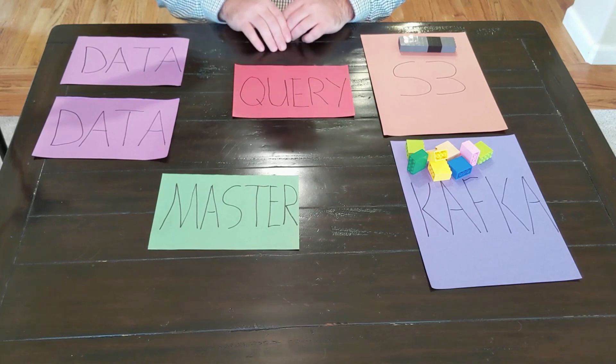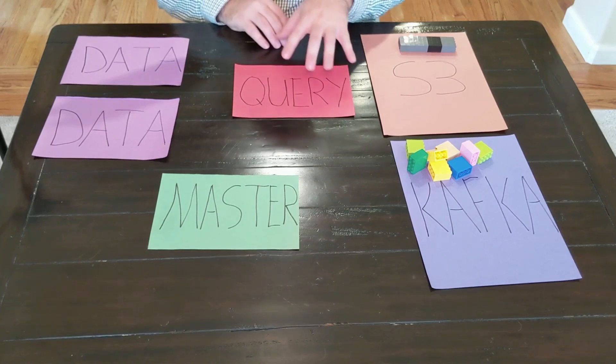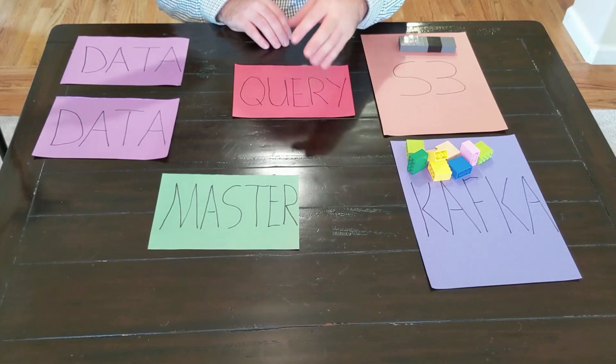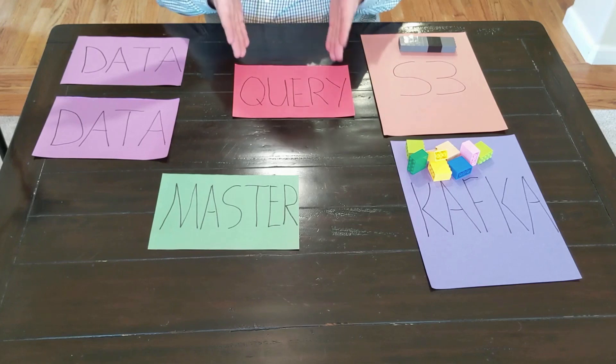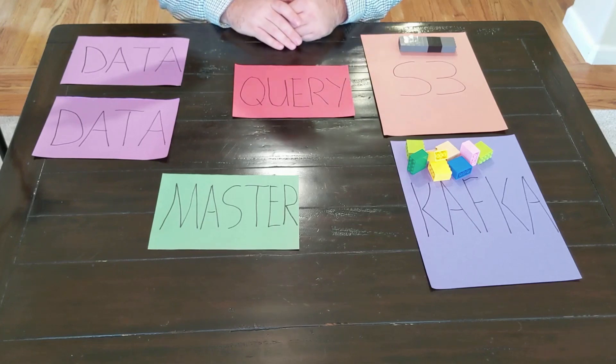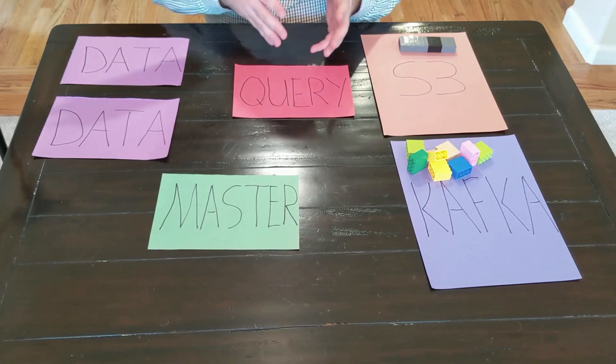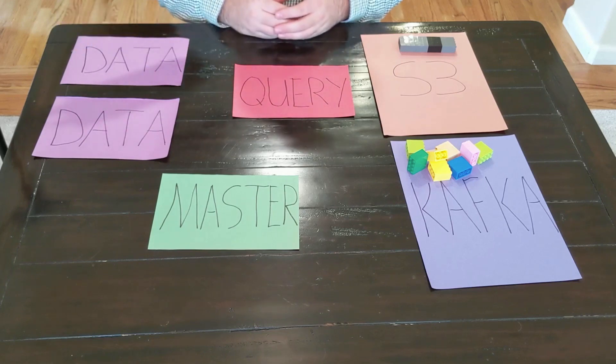Then we have our query server type. In this server type, this is where we do our interactions. When we're a client and we're running a SQL query, for example, our client will call into this query server type, and that query server type will then run the query for us and respond with those results.